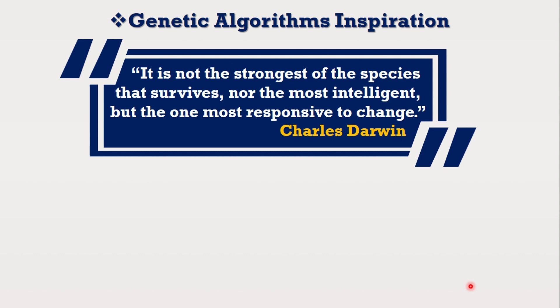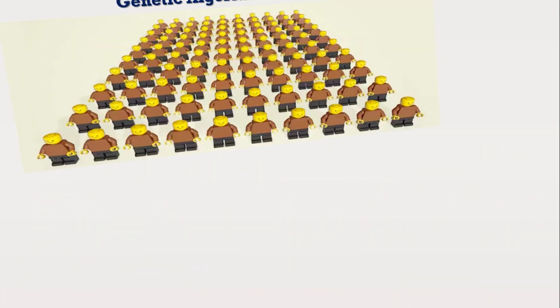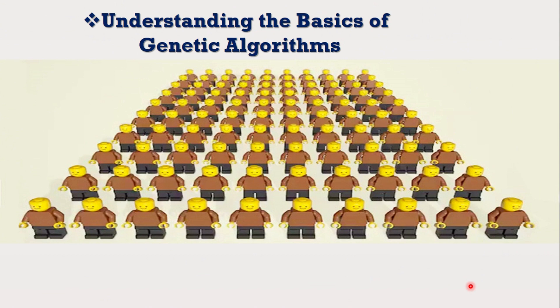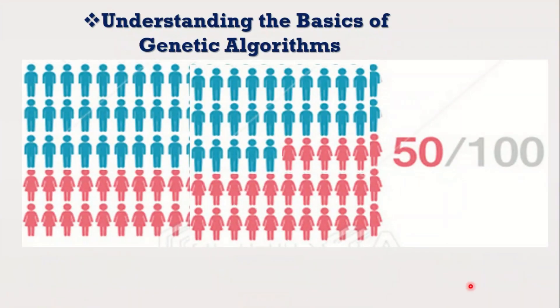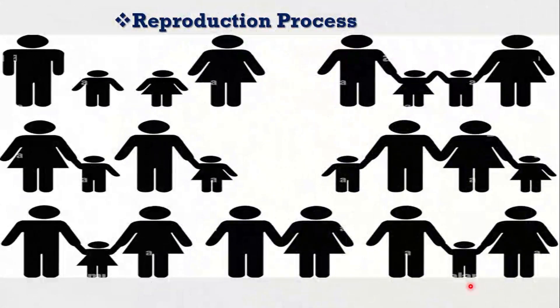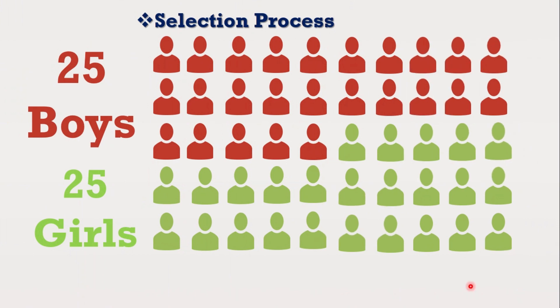To understand this concept, let's take an example. Suppose we have 100 people consisting of 50 men and 50 women. All 100 people get married and give birth to 50 children. These 50 children will have the best qualities of their parents. Out of these 50, there are 25 boys and 25 girls, selected for the next process to find the healthiest and most intelligent child.